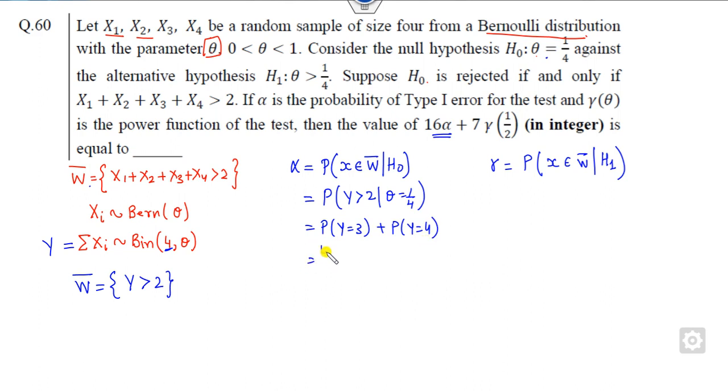So I can write this value as ⁴C₃(1/4)³(3/4) + ⁴C₄(1/4)⁴. ⁴C₃ is 4, it will be cancelled out. So 3/4³ + 1/4⁴.